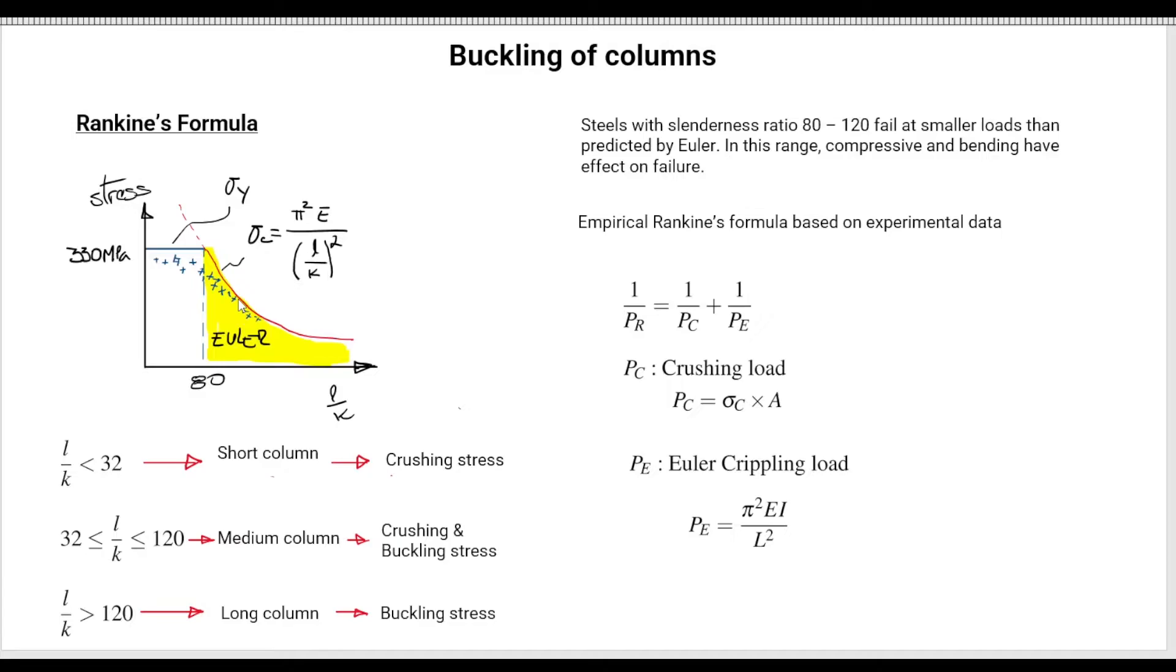So how to avoid this? Rankine said, what about if we consider that we have a combination of effects: failure due to compression and failure due to buckling. So Rankine formulated that a column might fail if the combined effect of crushing or compression and buckling reach a certain limit decided by this PR.